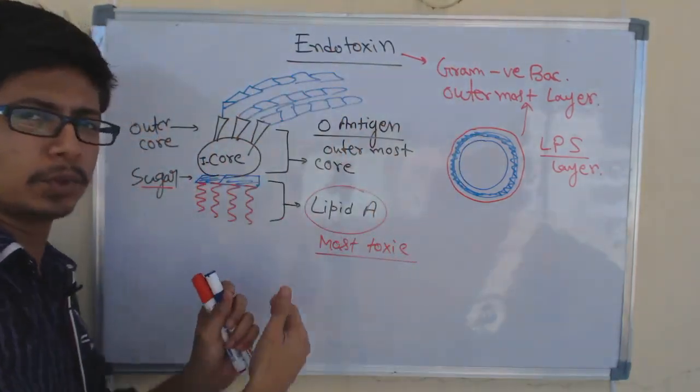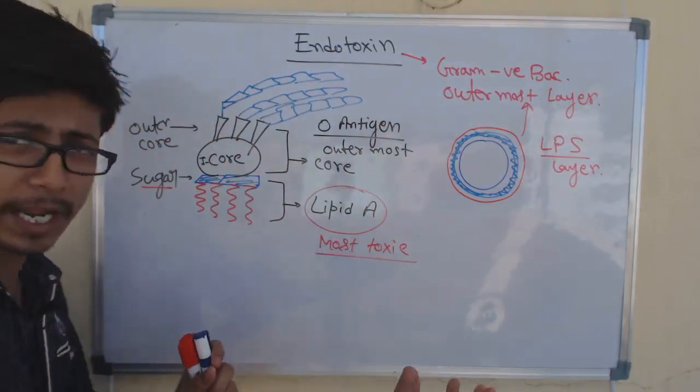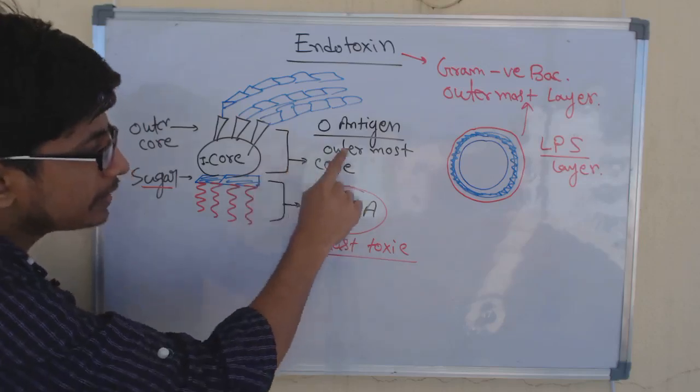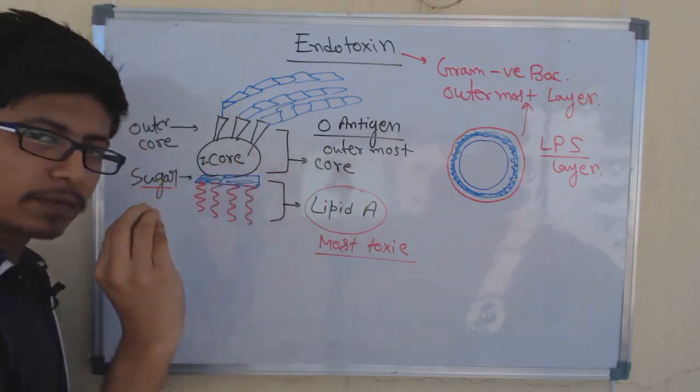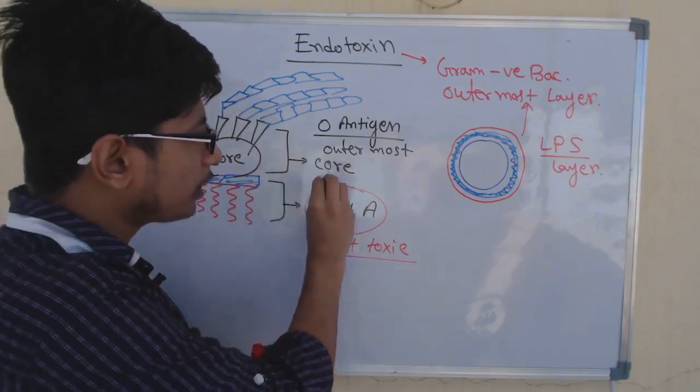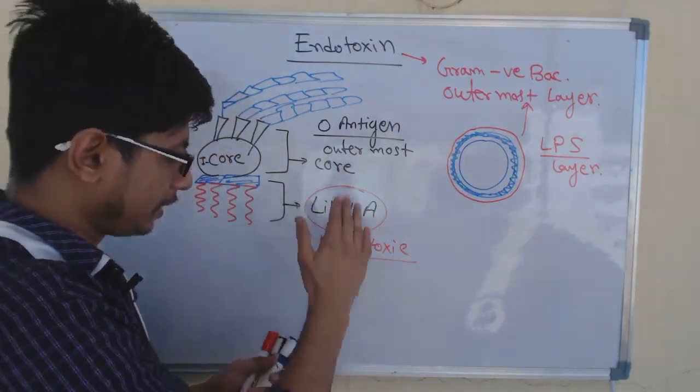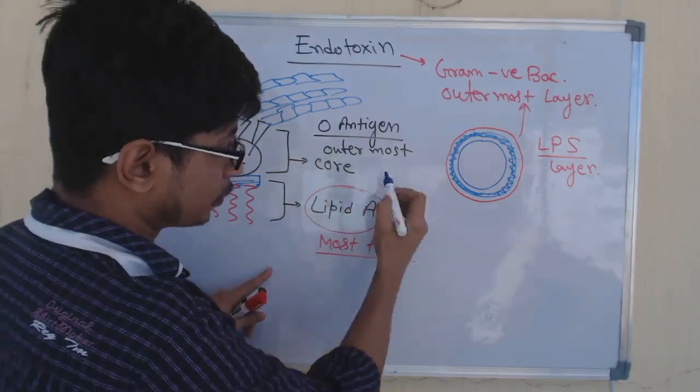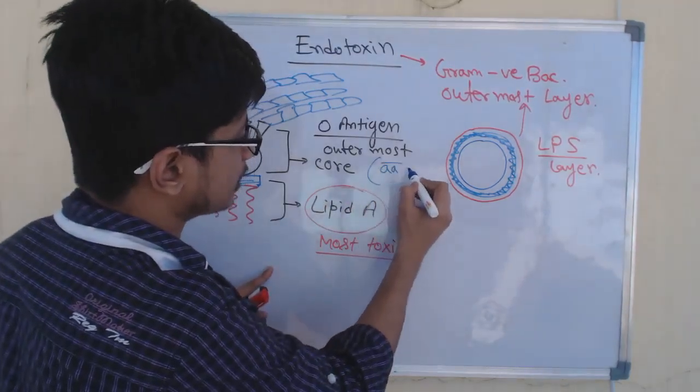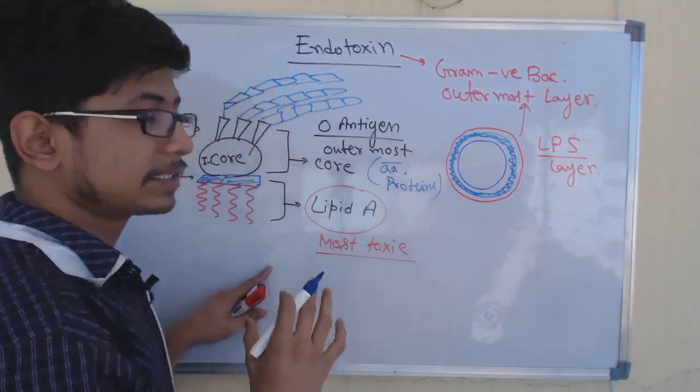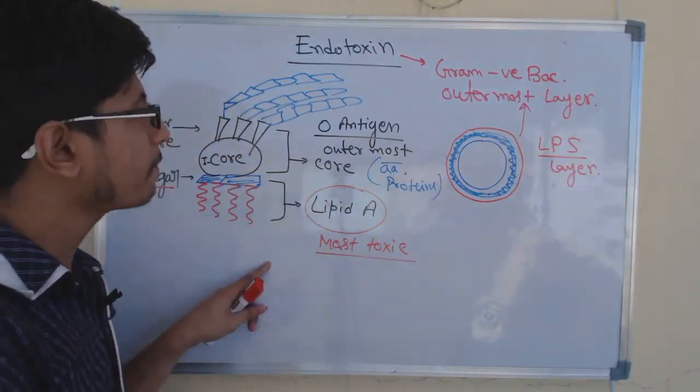This core region, though it most of the time contains sugar, also for different strains of bacteria this core can contain different molecules except sugar. It can also have amino acids, it can have proteins as a part of the core region.